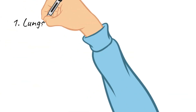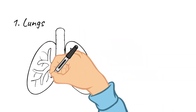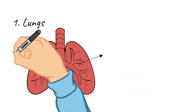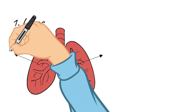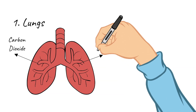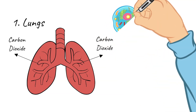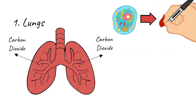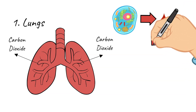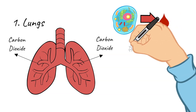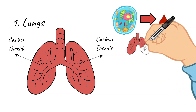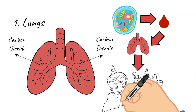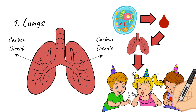The first part of the excretory system we are going to talk about is the lungs. The main thing that this organ is responsible for excreting is carbon dioxide. Carbon dioxide is created in the cells due to something called cellular respiration, and it is the waste product of this. It is then transferred to the bloodstream, and furthermore transferred to the lungs through the bloodstream. At the lungs, the carbon dioxide is exchanged for oxygen and expelled out of the body when you breathe out.